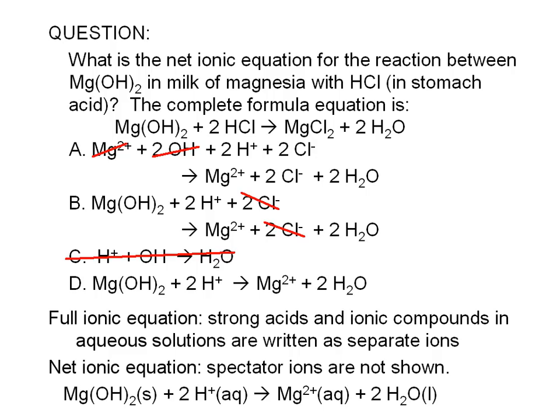Here's a more complete way of writing the net ionic equation for this reaction. We add labels to indicate that magnesium hydroxide is a solid, that hydrogen ions and magnesium ions are in solution, and that the water becomes part of the liquid water where the reaction is happening.